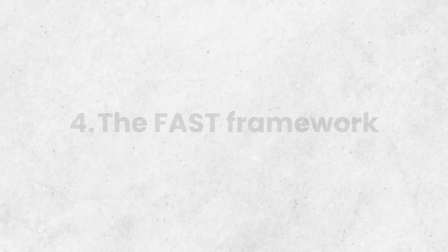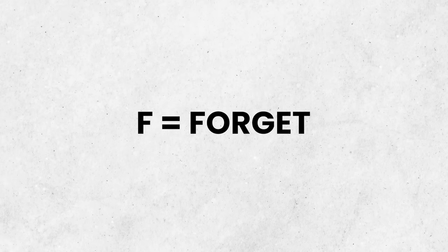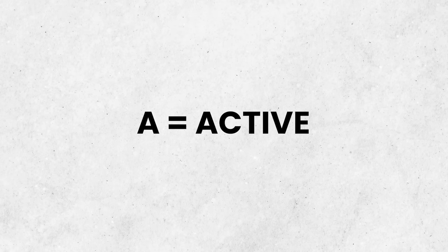The FAST framework comes straight from author and memory coach Jim Quick. The F in FAST stands for forget—you need to forget what you already know about the subject so you can approach it as a complete beginner. The A stands for active, meaning you need to be actively processing the information you're learning: constantly asking questions, answering questions, and summarizing the information you just learned in your own words.